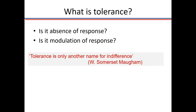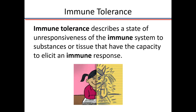As Somerset Maugham said, tolerance is only another name for indifference, and it cannot happen without the stimulus being there. So immune tolerance describes a state of unresponsiveness of the immune system to substances or tissues that have the capacity to elicit an immune response. If the substance doesn't have that capacity, it's not tolerance — it would be inhibition.